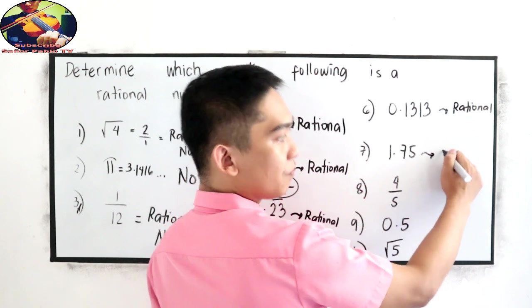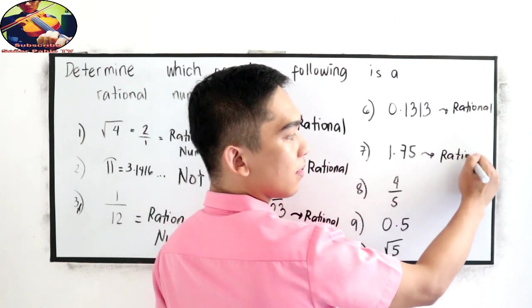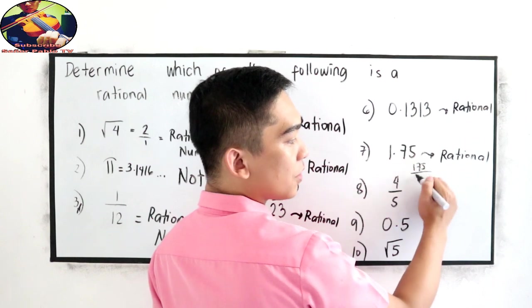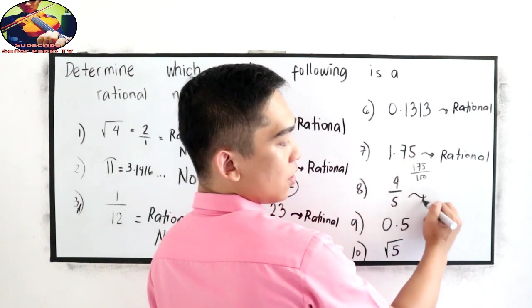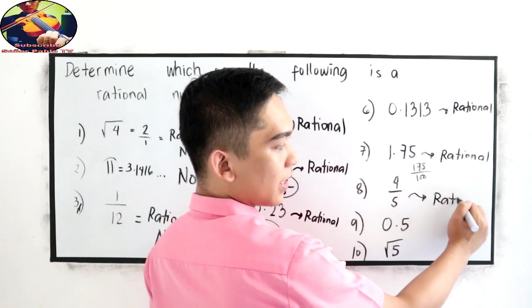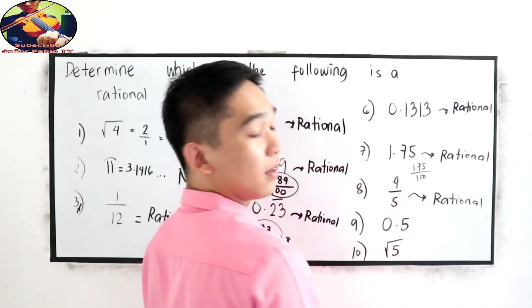1.75, rational. So, that is 175 over 100. Obviously, 4 over 5, it is a rational number.